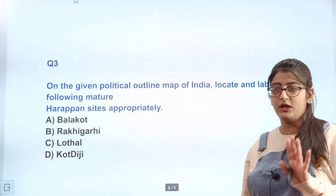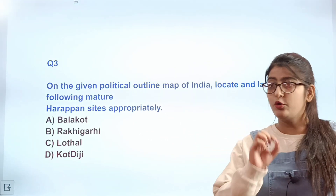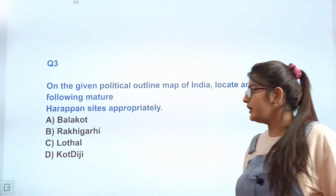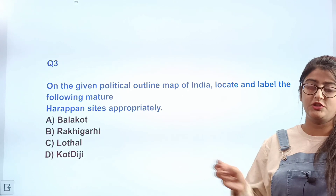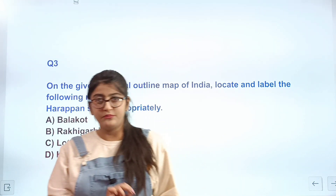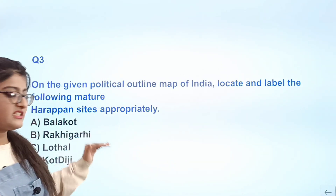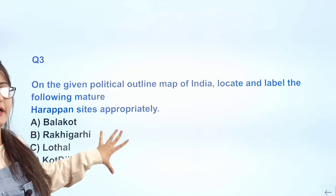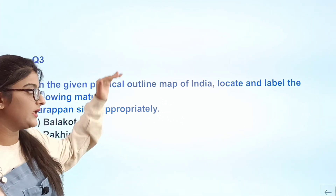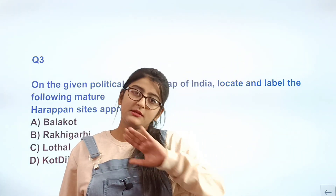Now this is your homework. You have to mark these places on the map: Balakot (B), Rakhigari (C), and Lothal (D). In this map question series I will revise every chapter's map. You have to arrange the map and cover all the maps. Today you have to mark these sites and revise the map questions.